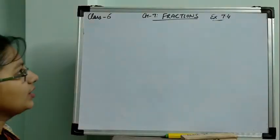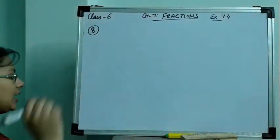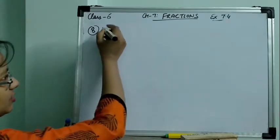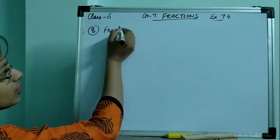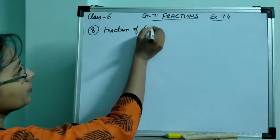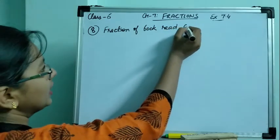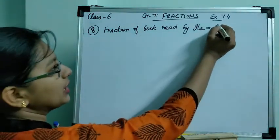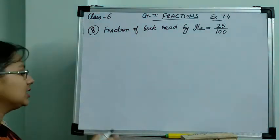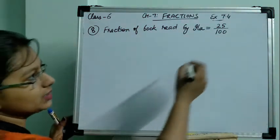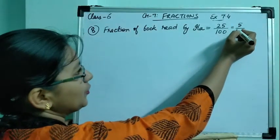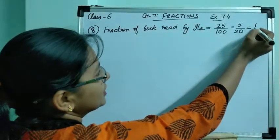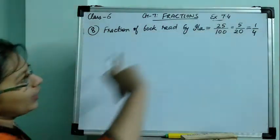Now moving to question number 8. The question is: Ila read 25 pages of a book containing 100 pages. Fraction of book read by Ila: we write total pages in the denominator and pages she read in the numerator. This gives 25 by 100. I can simplify this — both come in the table of 5. Five 5s are 25 and five 20s are 100, simplifying again gives 1 by 4. So Ila has read 1 by 4 fraction of the book.